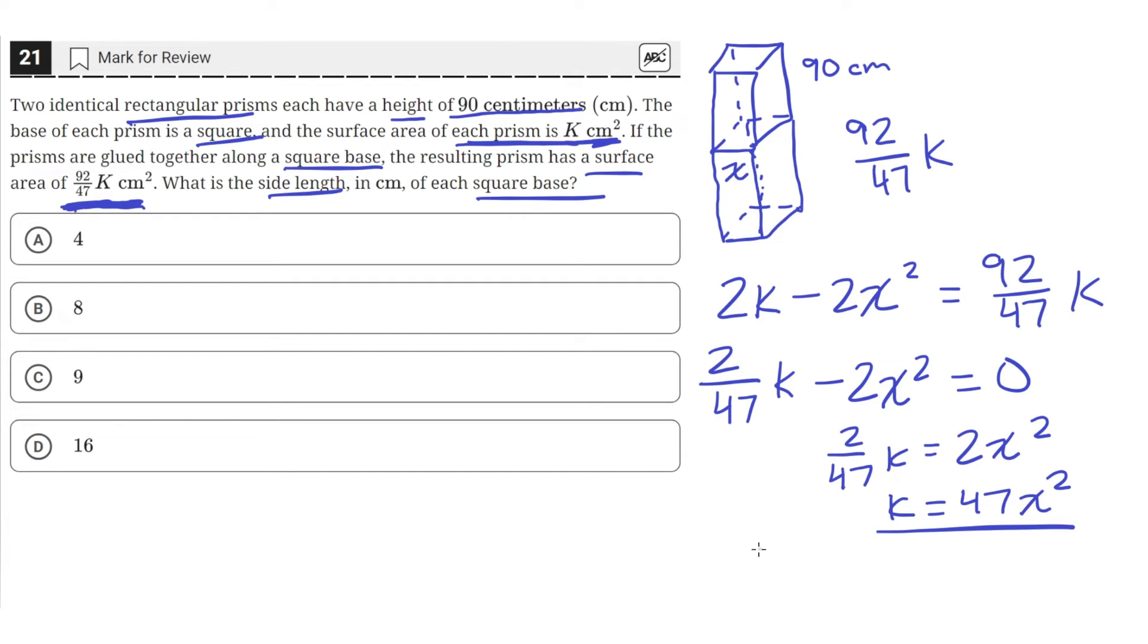But we can also express the surface area using x's and this 90 cm right here. The surface area of one rectangular prism is the area of the base, which is x². But there are two of them, one at the bottom down here and then one at the top. So we'll just multiply this by 2.